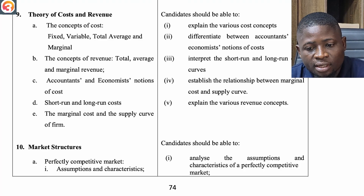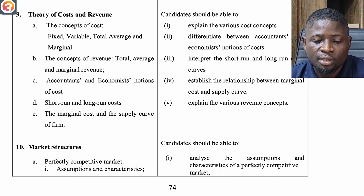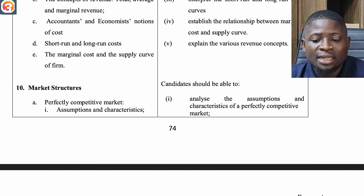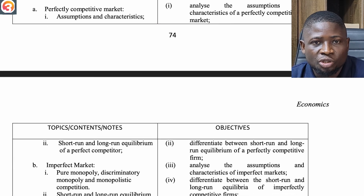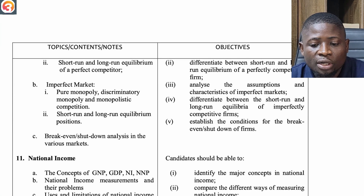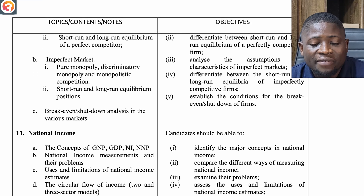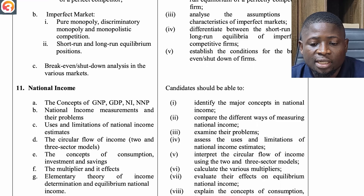The ninth topic is the Theory of Cost and Revenue — concepts of cost: fixed, variable, total, average and marginal; concept of revenue: total, average and marginal revenue; accountants' and economists' notions of cost; short-run and long-run cost; and the marginal cost and supply curve of a firm. The tenth topic is Market Structures — perfectly competitive market: assumptions, characteristics and short-run and long-run equilibrium; imperfect markets: pure monopoly, discriminatory monopoly and monopolistic competition; short-run and long-run equilibrium positions; and break-even and shut-down analysis.